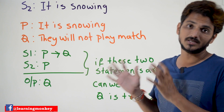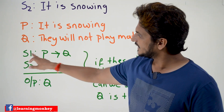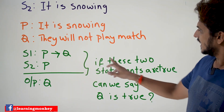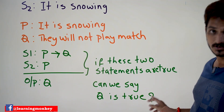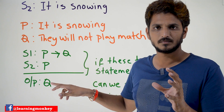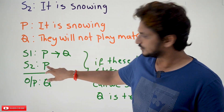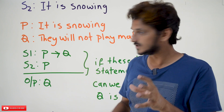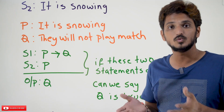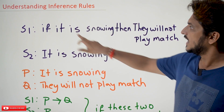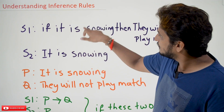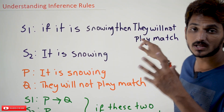Up to now we already know these basic things from our beginning classes. So statement S1 is P implies Q, and statement S2 is P. Now this is the key point: if these two statements are true, can we say that Q is true? Someone has told you that these two statements are true — meaning P implies Q is true and P is true. What is the meaning of P implies Q? If P is true then Q has to be true.